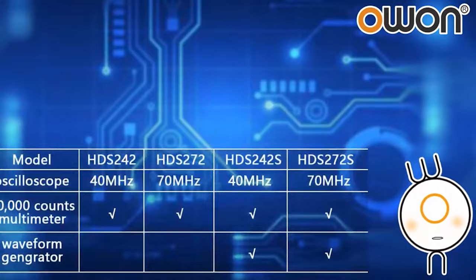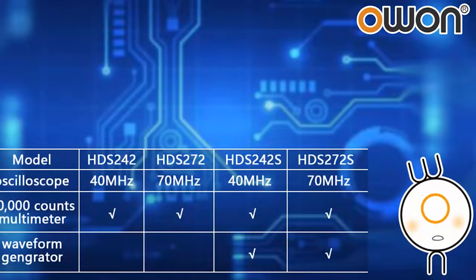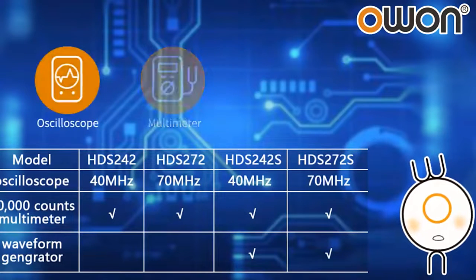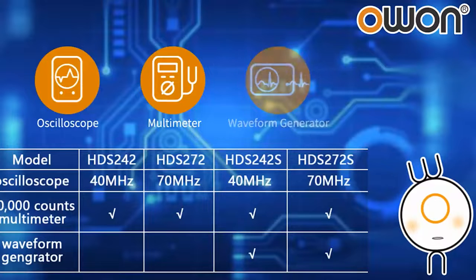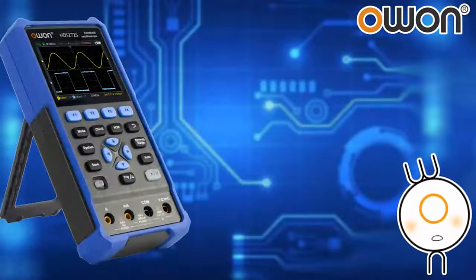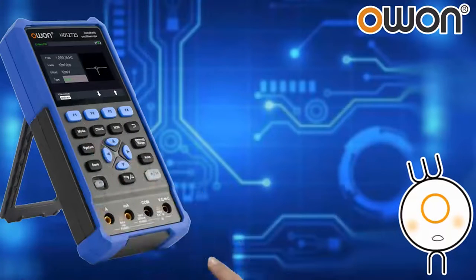The HDS200 Series has 4 models. It integrates the functions of oscilloscope, multimeter, and waveform generator in one. Switch between the three functions with just one key.